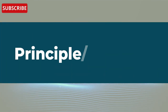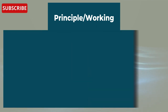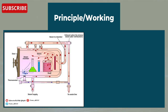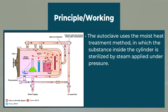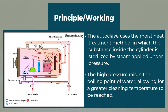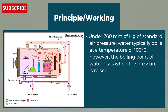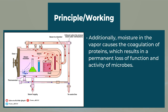Now let's dive into the autoclave principle or working. The autoclave uses the moist heat treatment method in which the substances inside the cylinder are sterilized by steam applied under pressure. The high pressure raises the boiling point of water, allowing for a greater cleaning temperature to be reached. Under 760 mmHg of standard air pressure, water typically boils at 100 degrees Celsius. However, the boiling point of water rises when the pressure is raised. Additionally, moisture in the vapor causes the coagulation of proteins, which results in a permanent loss of function and activity of microbes.